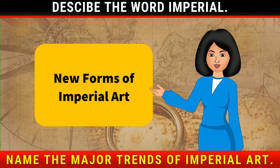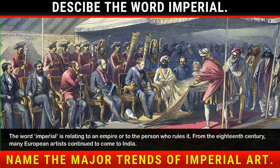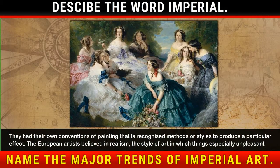New Forms of Imperial Art. The word 'imperial' relates to an empire or to the person who rules it. From the 18th century, many European artists continued to come to India. They had their own conventions of painting — recognized methods or styles used to produce a particular effect.